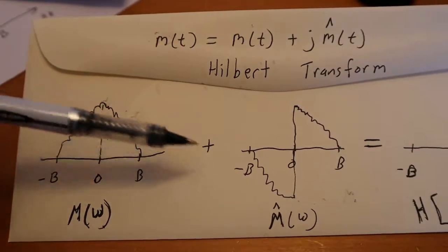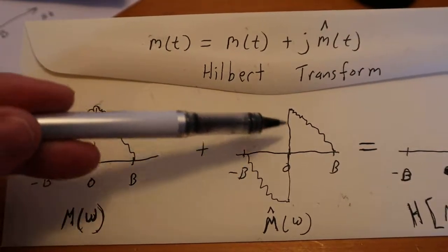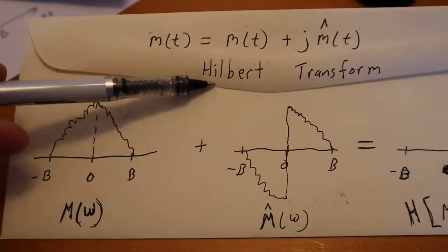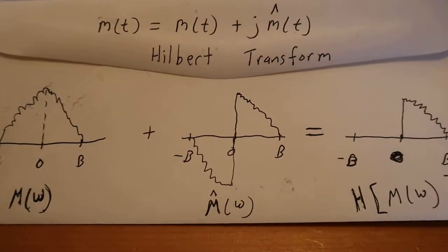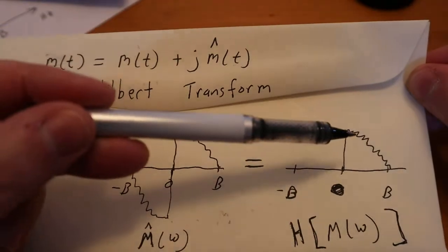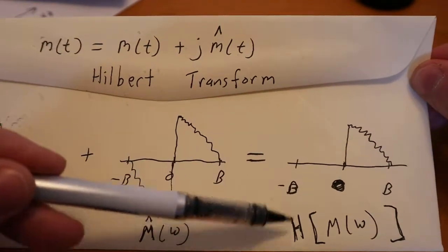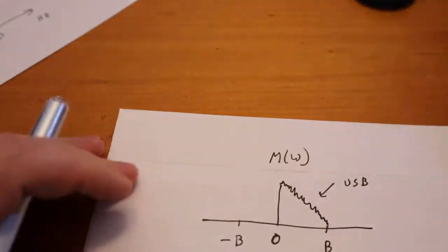So we take our original guy, we add this shifted thing by the complex Hilbert Transform, and this guy and that guy cancel, and we're left with that. So that's our final guy, thanks to the Hilbert guy. Alright, hopefully that was clear as mud.